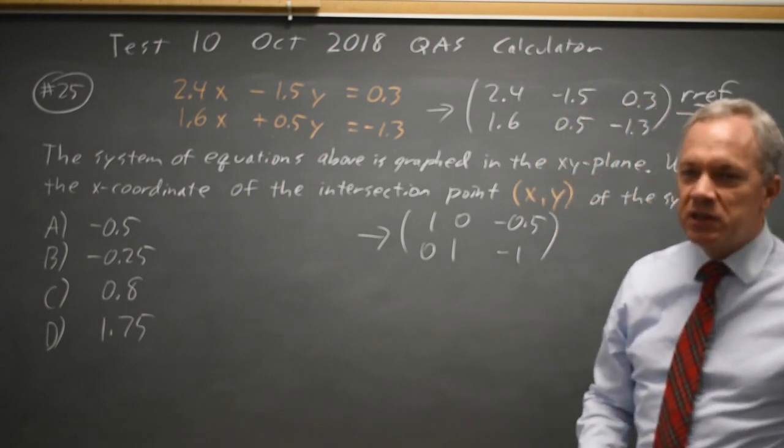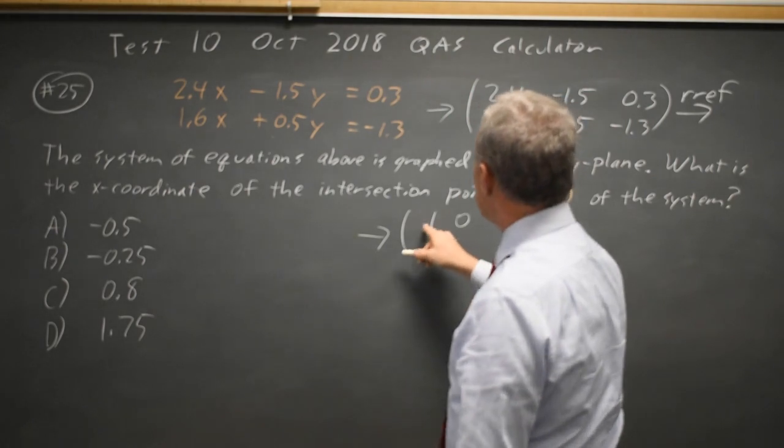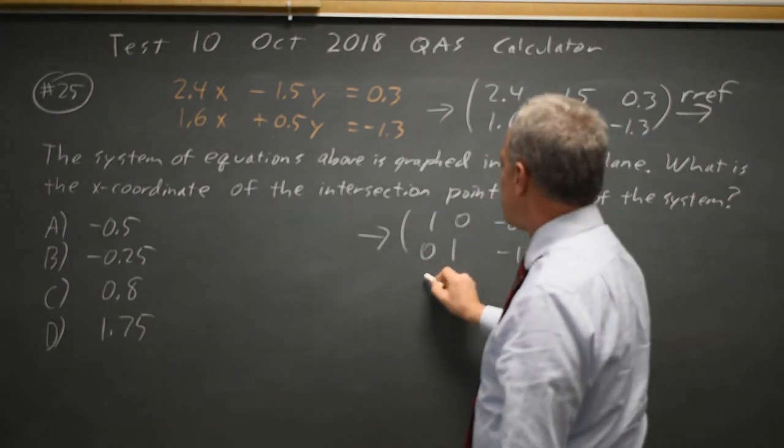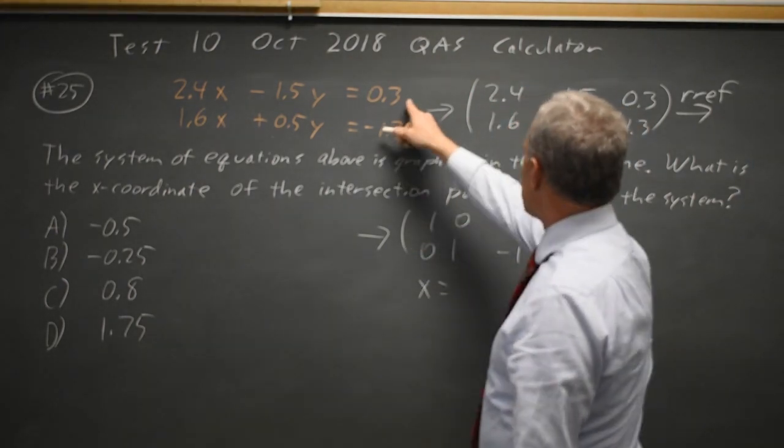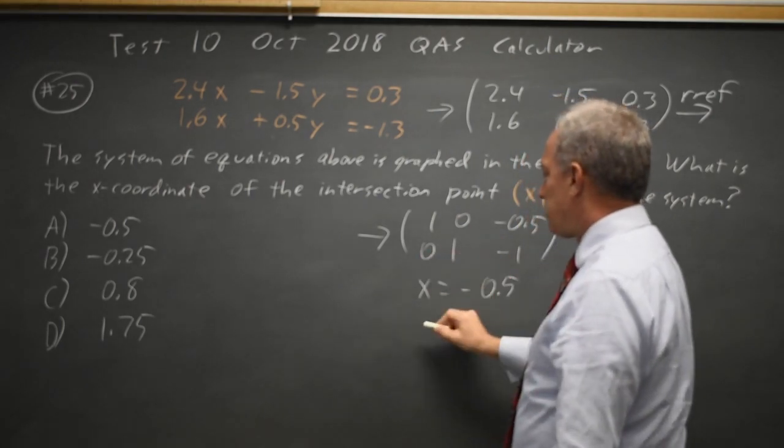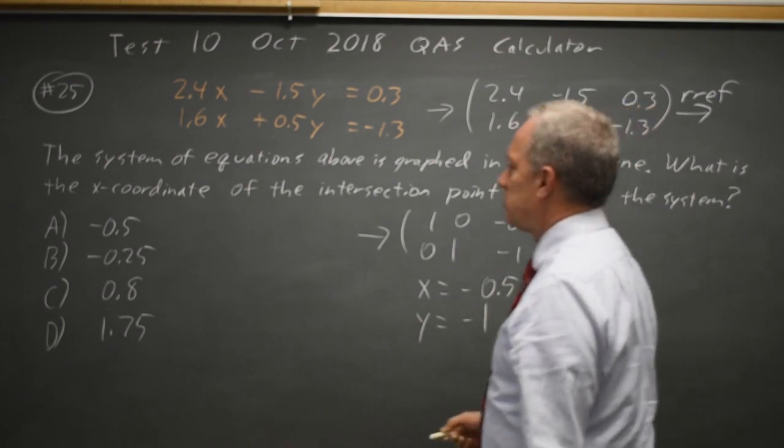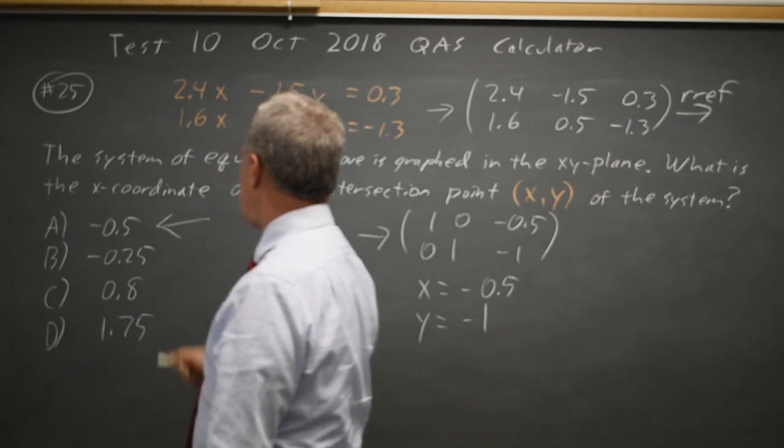If I convert this back to a system by undoing what I did to go to a matrix, this means 1x plus 0y is just x, equals on the right-hand side, negative 0.5, and 0x plus 1y is y, equals negative 1. They're asking for the x coordinate, so that would be choice A.